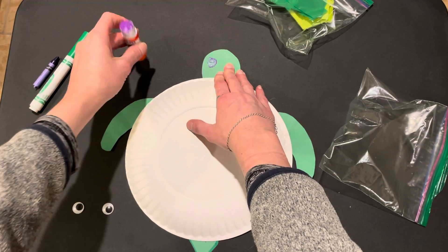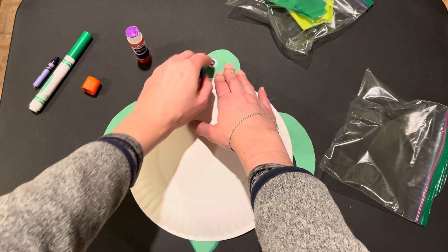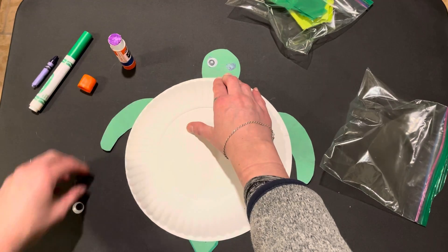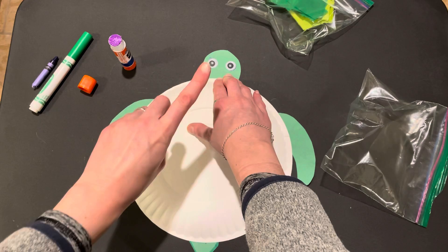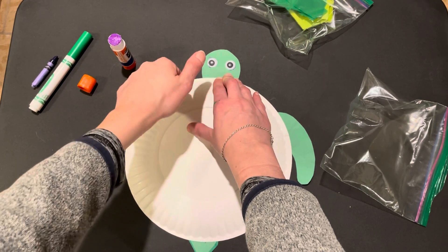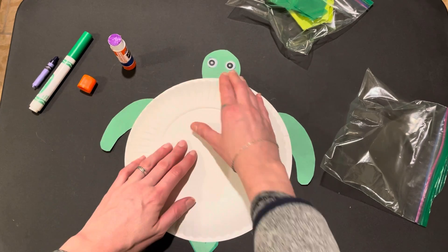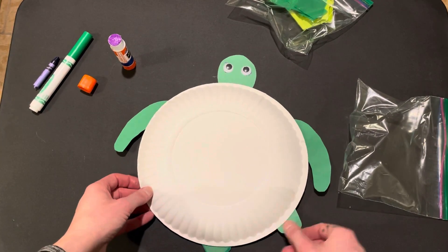So, put glue on. Glue down. Put on. Push. Glue on. Push. Again, that finger isolation or thumb or even using whole hand, but really trying to push. Push. Okay. So, once we're here, now we can use our tissue paper to decorate the turtle shell.